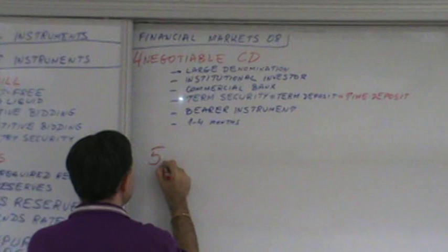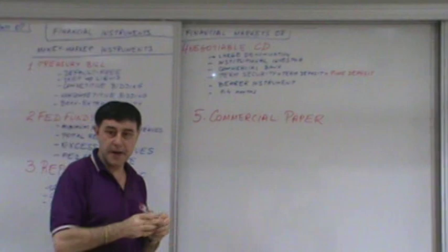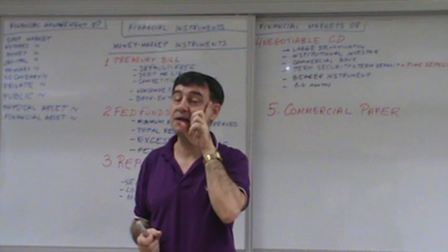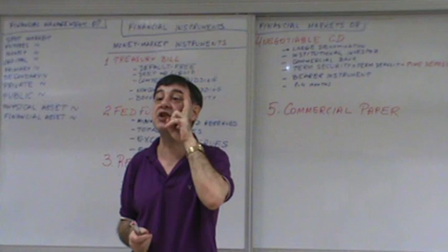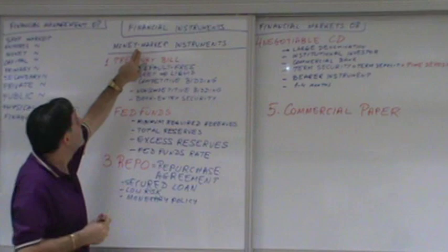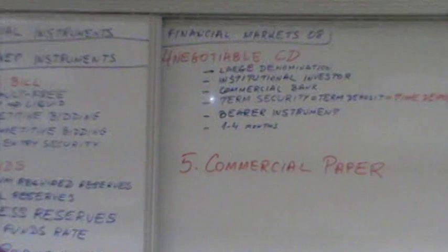Number five: Commercial paper. Commercial paper is issued by corporations or financial institutions — commonly by corporations. But a lot of times commercial banks and especially investment banks will issue commercial paper to finance themselves. It is a short-term instrument — commercial paper is short term.